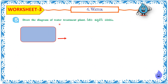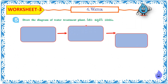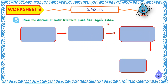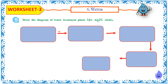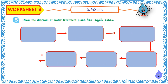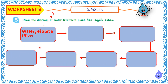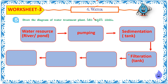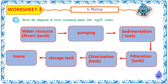Draw the diagram of a water treatment plant. The steps to purify water are: Water resource (river or pond) → Pumping → Sedimentation → Filtration → Chlorination → Storage Tank → Home.